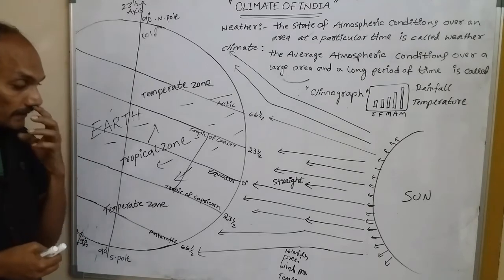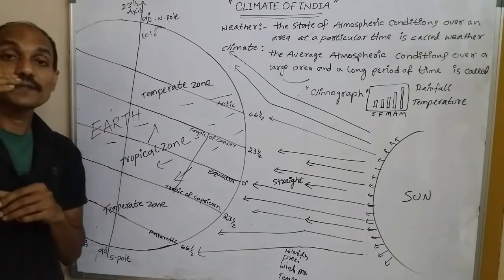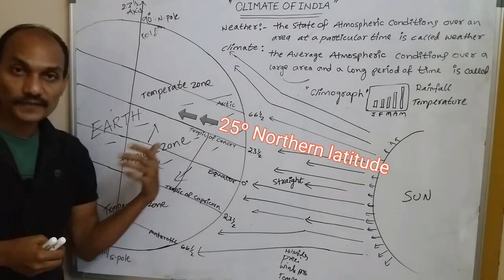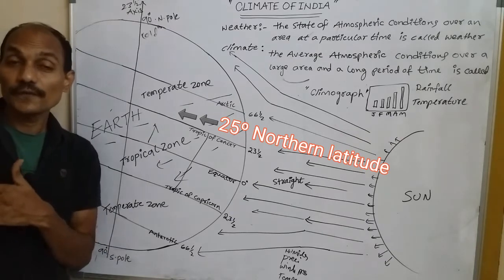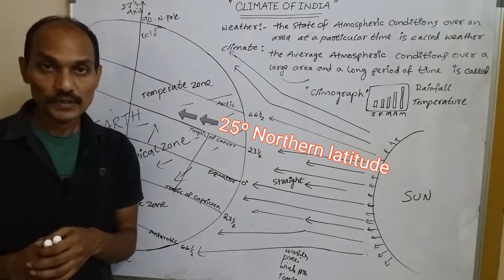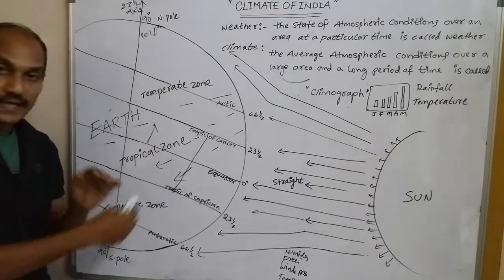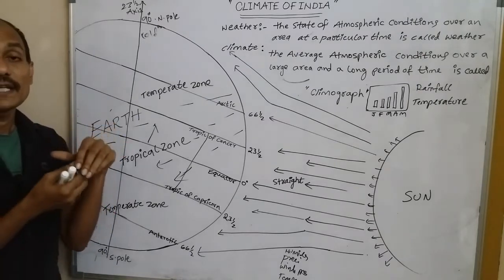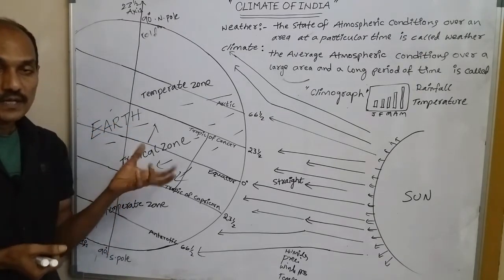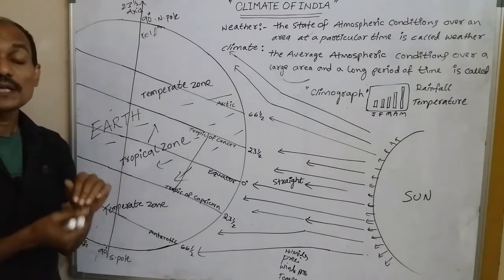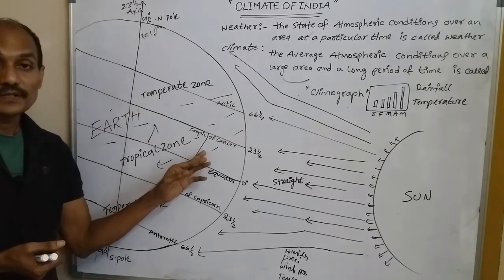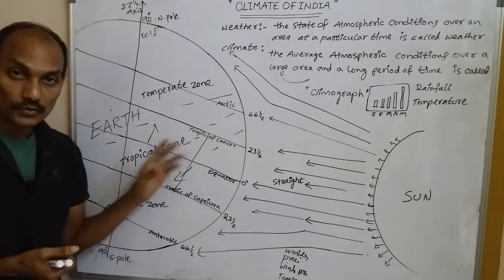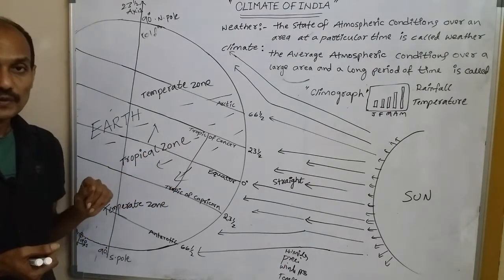Jet streams develop at 25 degrees north latitude. Due to these jet streams, the neighboring atmosphere becomes cool and it may also rain. The areas in front of the jet stream can experience cool temperatures and rainfall because of these fast-moving trade winds.